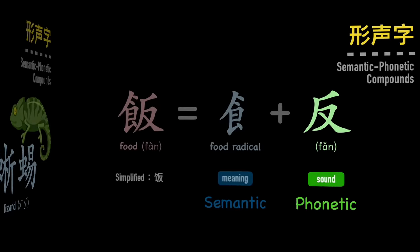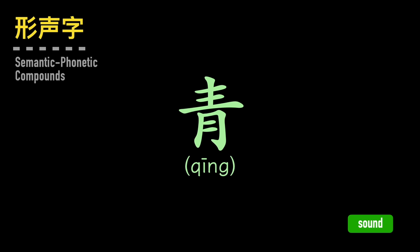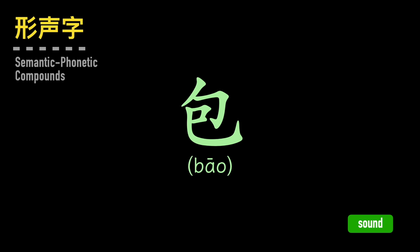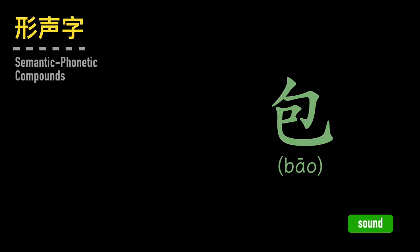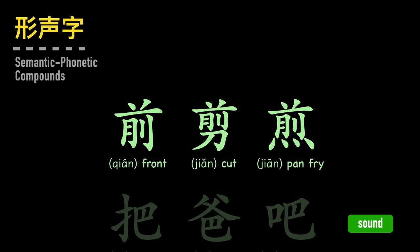And finally, if you understand the phonetic component, you can predict the pronunciation of unknown characters. For example, this character is pronounced qīng and means green or blue — and these characters share the same phonetic component and pronunciation. This character means bag, and these characters are also pronounced similarly. Or just look at the many groups of characters with matching phonetic components.